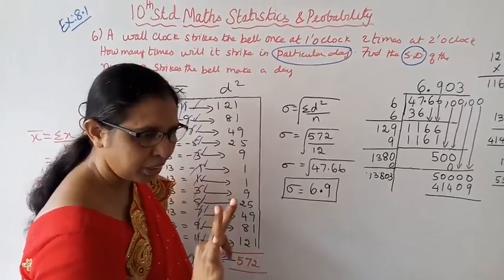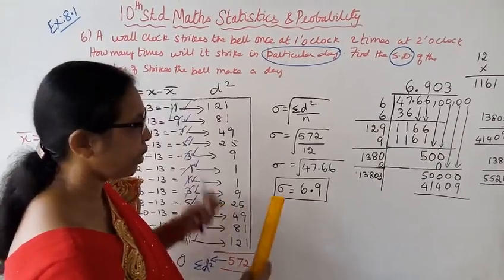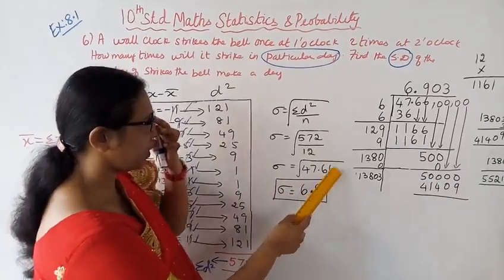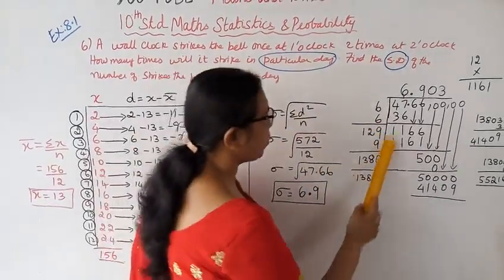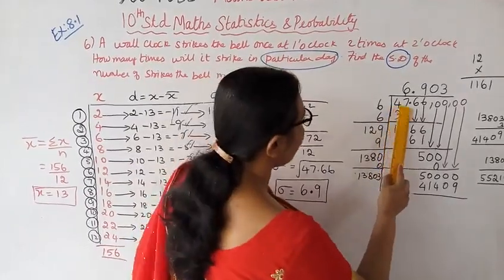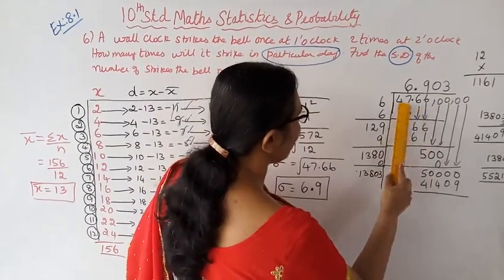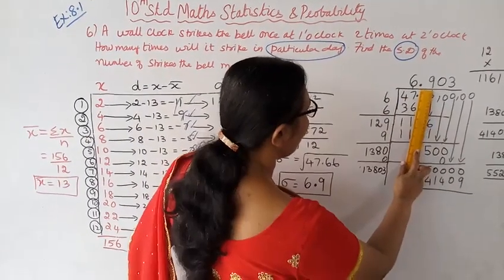Performing the long division for the square root of 47.66: starting with 47.66.